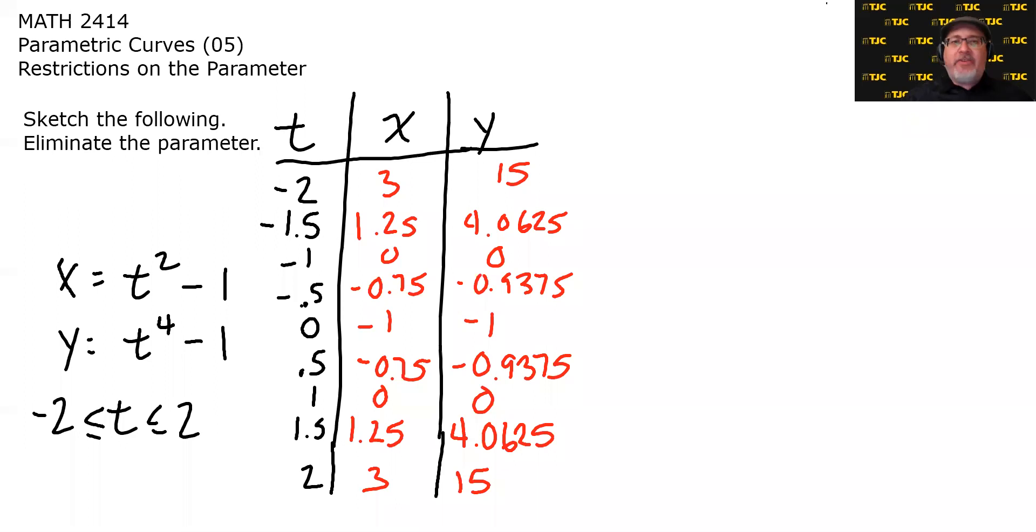And there are the rest of the values. Now you may be wondering, what do we do when an ordered pair shows up more than once? For example, this curve is going to start at 3, 15, but it's also going to end at 3, 15. The ordered pair, not the time. So what does it mean for a curve to go back to where it started? It means precisely that.